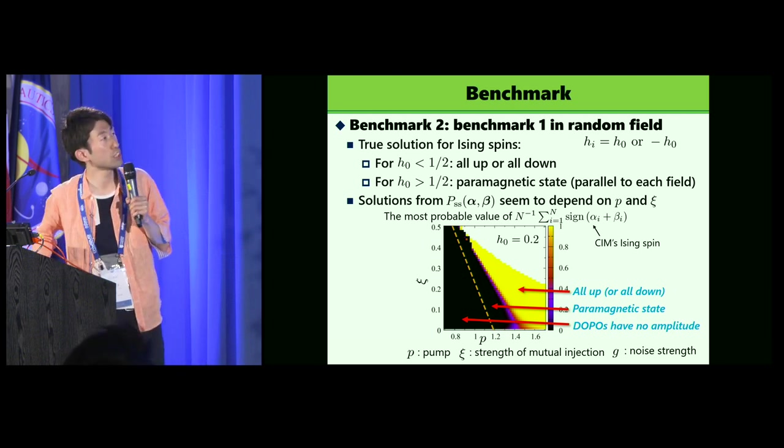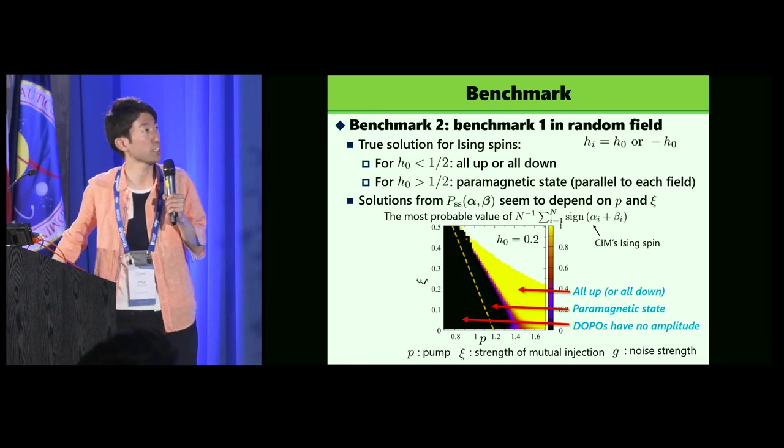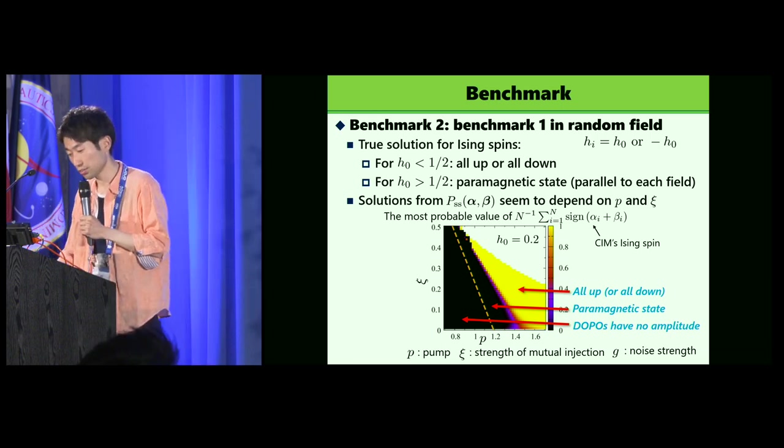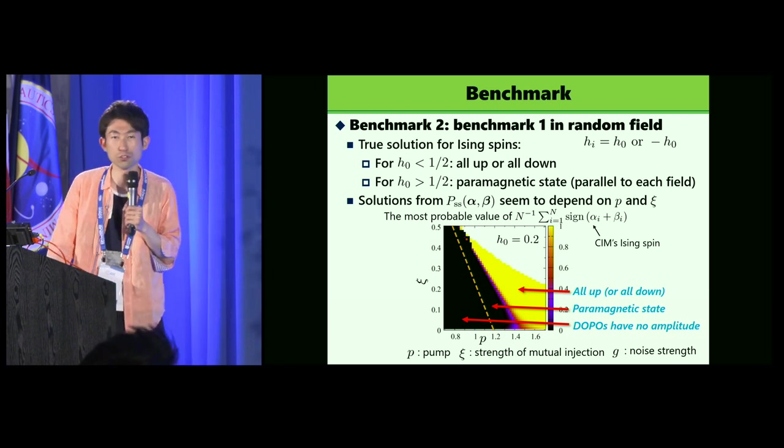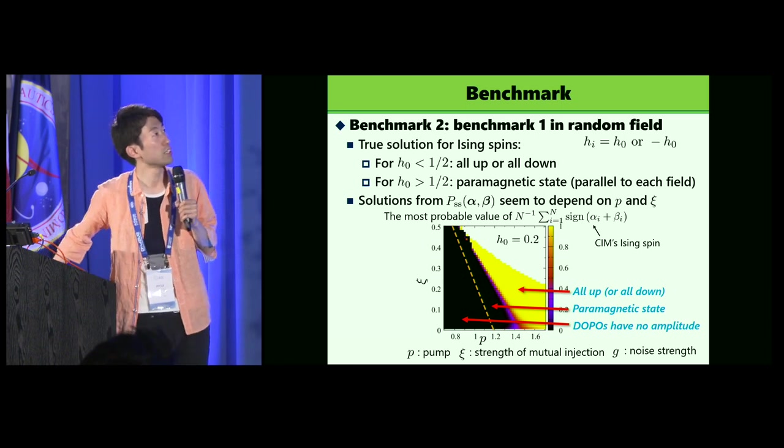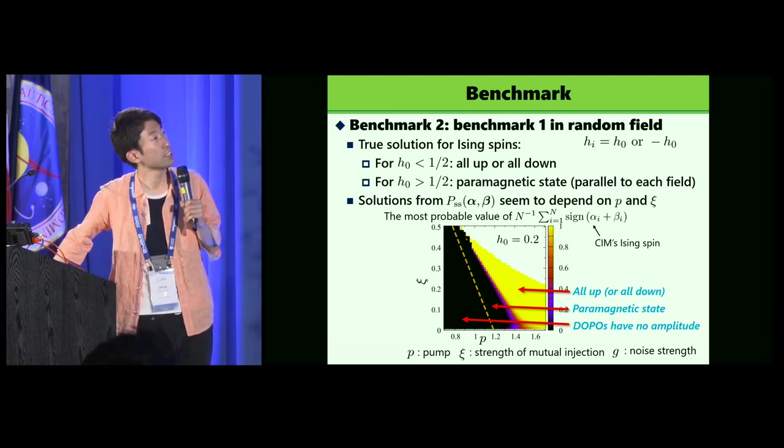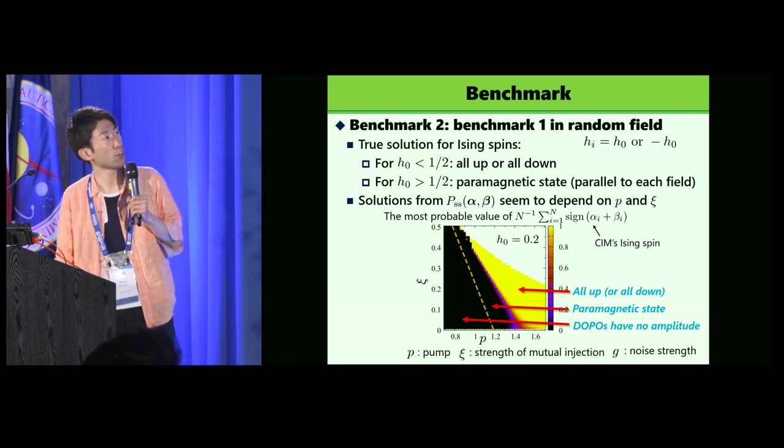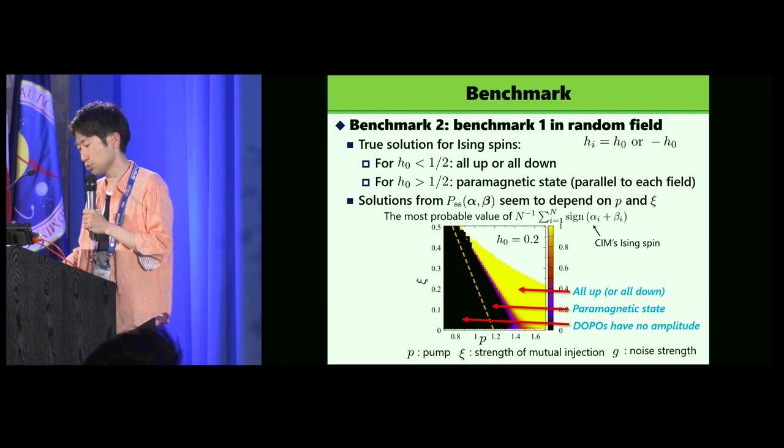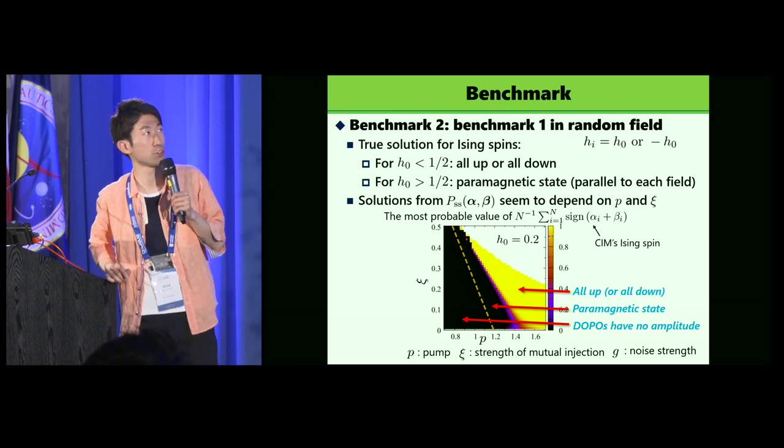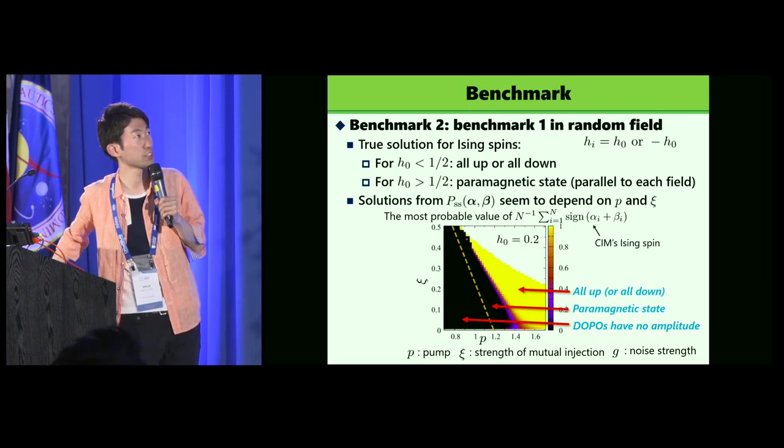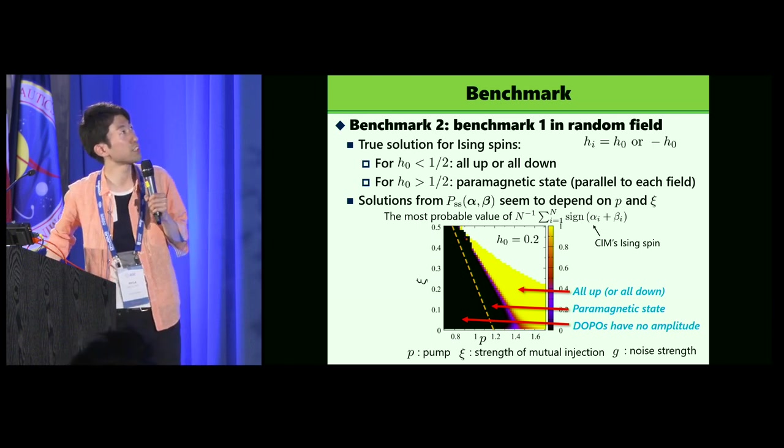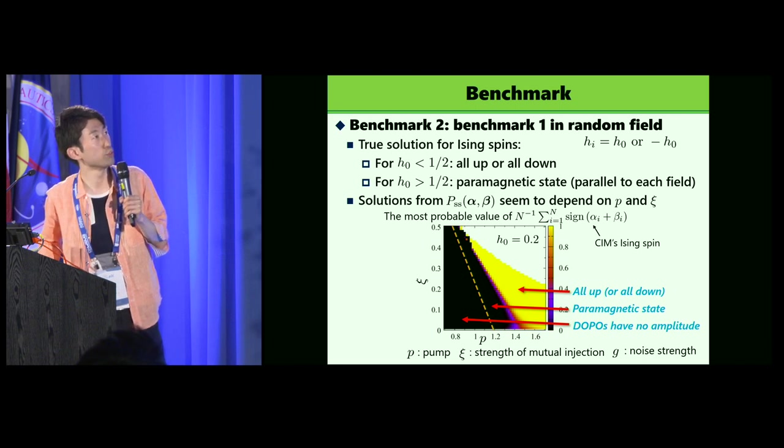The figure shows the obtained solution and the most probable value of our magnetization obtained from the steady-state distributions. The black region is for DOPOs have no amplitude, so we have no solution. But the dashed, the second region, paramagnetic state, is calculated as a quantity, we can know that there is a paramagnetic state. And with more larger P and C, all up or all down are obtained. So this is for H_0 smaller than 0.5, so the correct solution is all up or all down, so it seems to be making a mistake in the small P and C region.